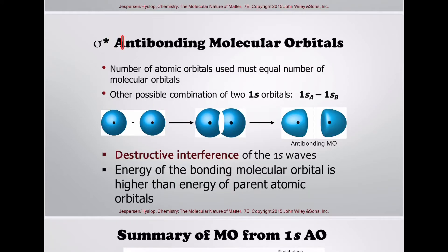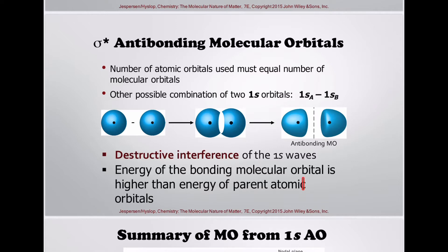This is the symbol of the anti-bonding molecular orbitals. The number of atomic orbitals used must equal the number of molecular orbitals formed. The other possible combination of two 1s orbitals involves destructive interference of the 1s waves, raising the energy of the anti-bonding molecular orbital above the energy of the parent atomic orbitals.